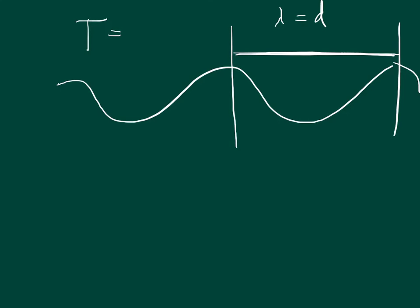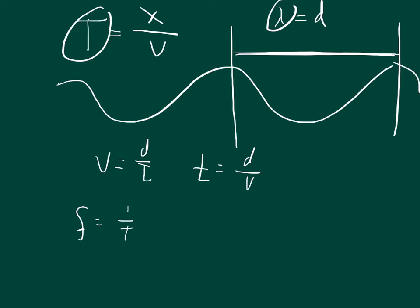So if velocity equals distance over time, then we can solve for time by time equals distance over velocity. And so we can take the distance, which is lambda. So lambda over velocity is equal to the time of one period. Now the thing that you have to remember is that frequency is equal to 1 over T. So if we take T is equal to lambda over the velocity, then 1 over that is basically flipping it over. So V over wavelength, velocity over wavelength. So the frequency is equal to the velocity over the wavelength.